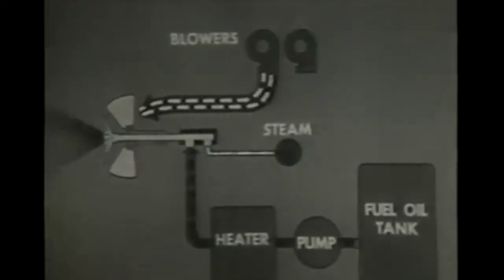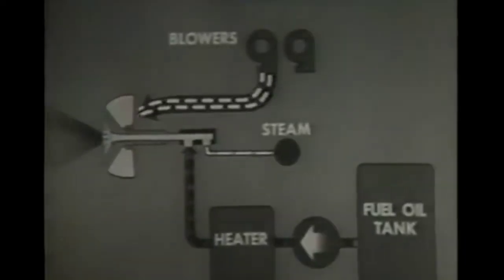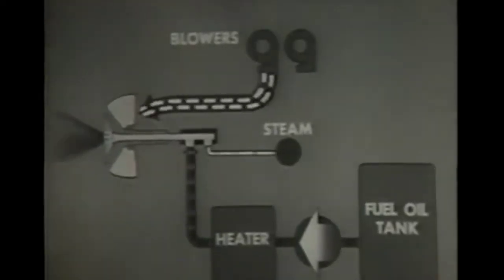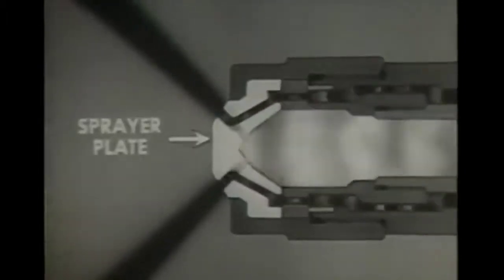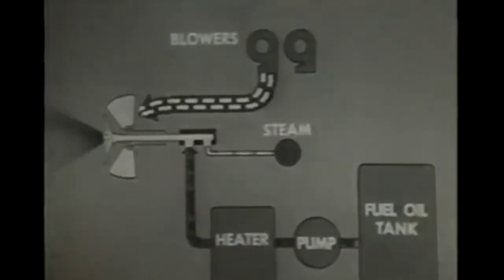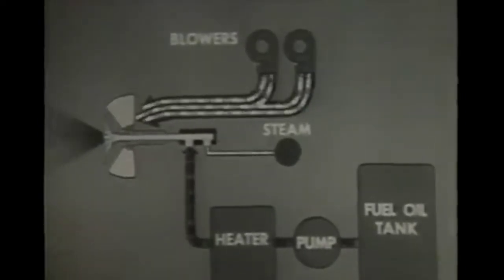Meanwhile, the air from the forced draft blowers is entering the register and mixing with the oil spray. Control of the burner involves regulating the air, oil, and steam supply. Regulate oil pressure to regulate the quantity of oil. When you increase or decrease oil pressure, you must change the steam pressure correspondingly to get good atomization. You must also change the sprayer plate in the burner if the capacity of the plate is incorrect for the new firing rate. As with most burners, you adjust the speed of the blowers and the number in service to control the air supply.